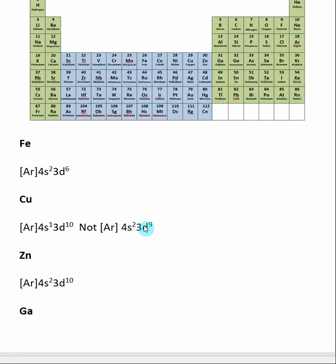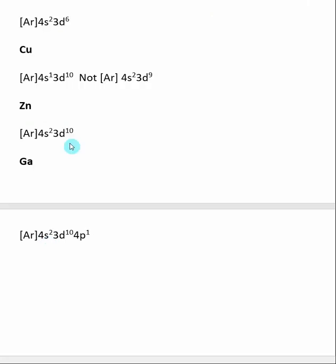But to gain the stability of having a full 3D subshell, it's going to grab one of these 4S electrons to become 3D10. So copper has an electron configuration of argon, noble gas core, 4S1, 3D10. And we're going to see some evidence of this later on when we do form cations with transition metals that actually copper can form a plus 1 charge because it can lose this S electron. Many of the other transition metals tend to form plus 2 charges.